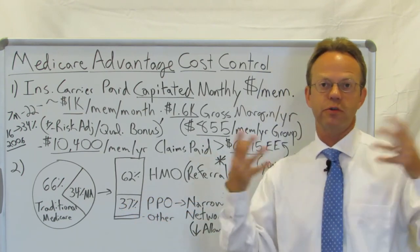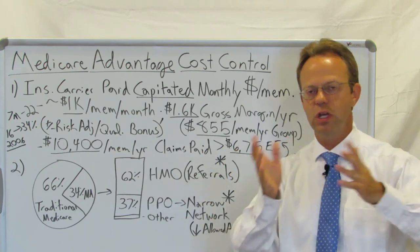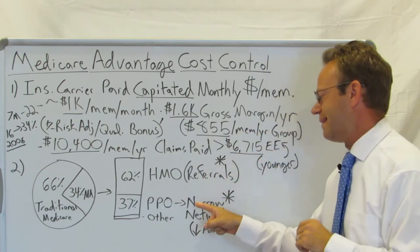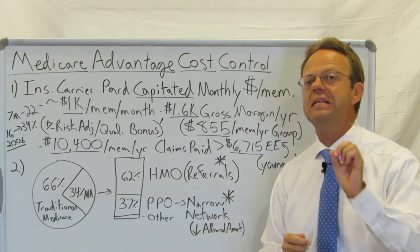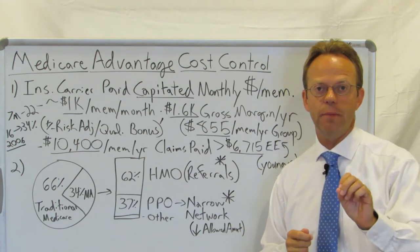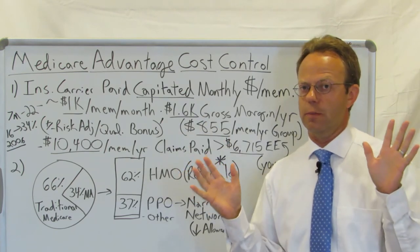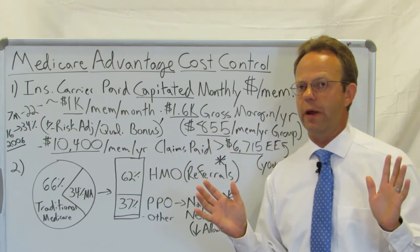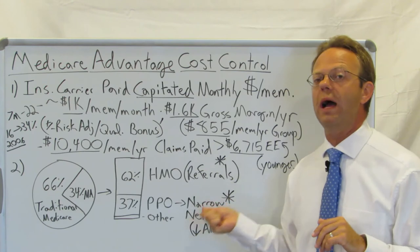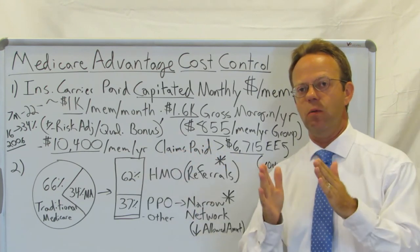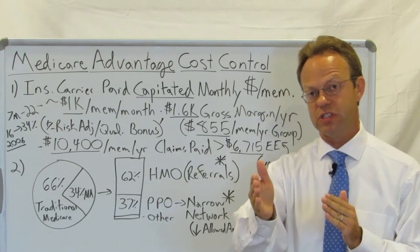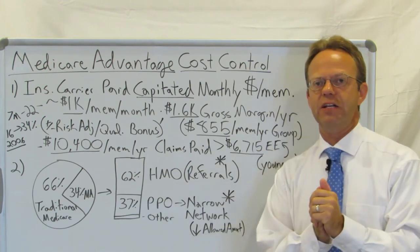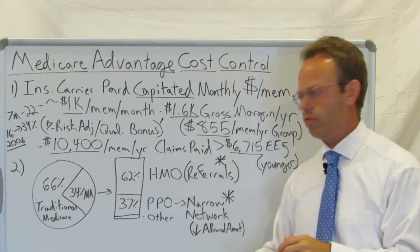About 37% are on what's referred to as a traditional PPO plan, where you can choose individual doctors, whether PCPs or specialists. Note that the networks for those PPOs tend to be narrow. For example, here in DFW, a major Medicare Advantage commercial plan does not have a major hospital system in the DFW area in their network. When you have a narrow network, the insurance carrier can go to a hospital system and say, 'You're going to get almost all of our Medicare Advantage patients, so you need to give us a better contracted rate or allowed amount.'